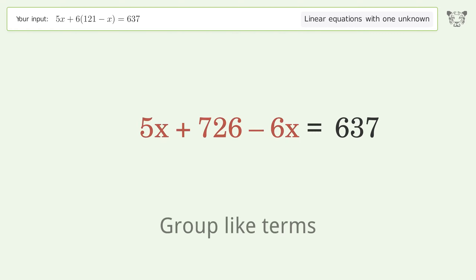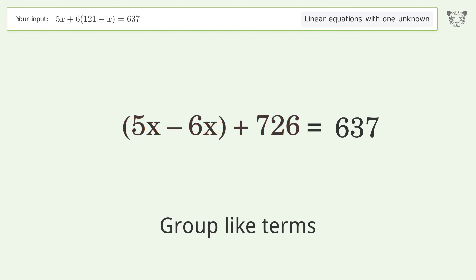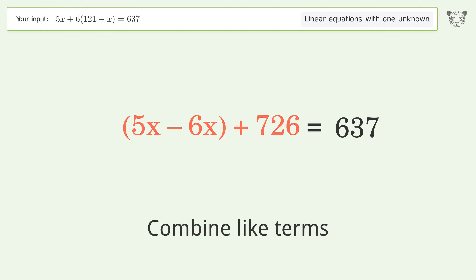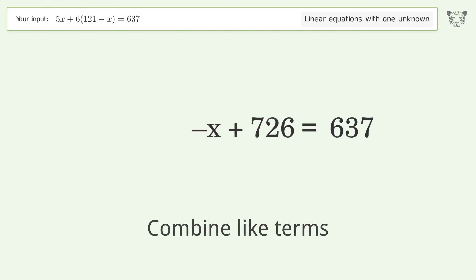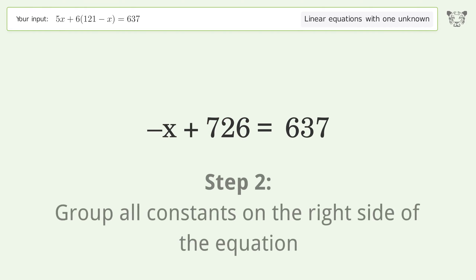Group like terms and combine like terms. Then group all constants on the right side of the equation.